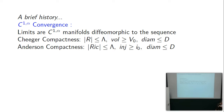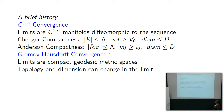Gromov-Hausdorff convergence: you take a sequence of Riemannian manifolds and think of them as metric spaces, with distance defined as the infimum of lengths of all curves. The limits are then just compact geodesic metric spaces — metric spaces with a length-minimizing curve between every pair of points whose length equals the distance between those points. That's what a geodesic metric space is; this is perfect for Alexandrov geometry.